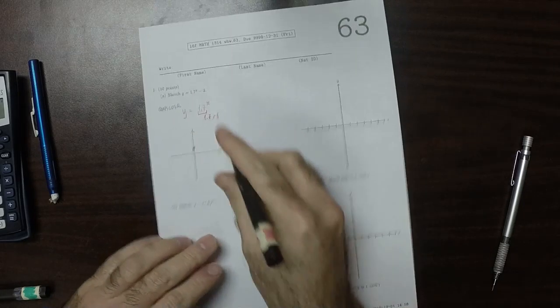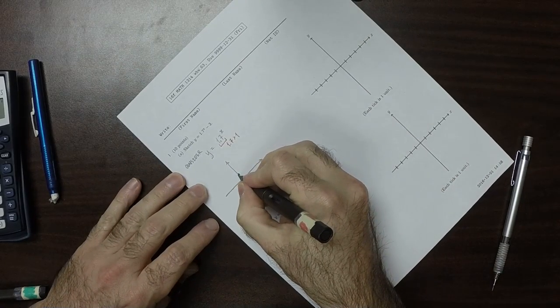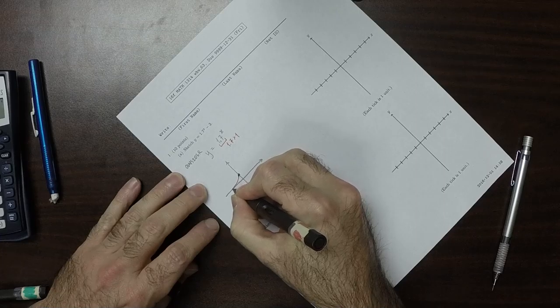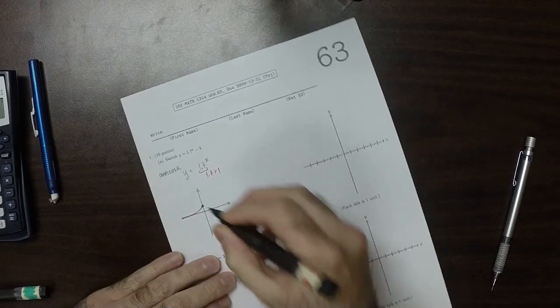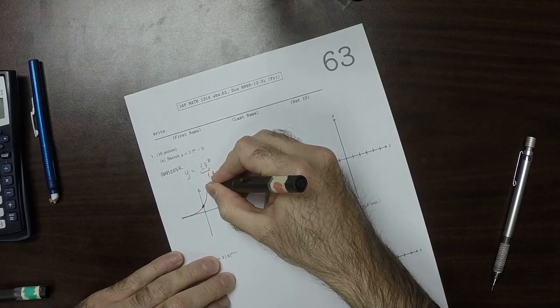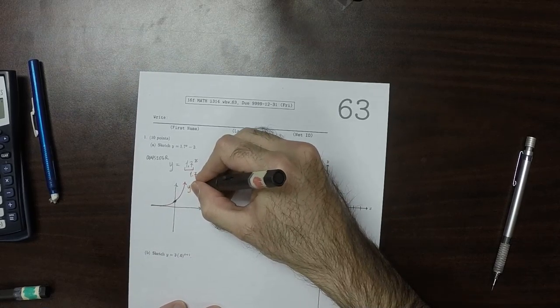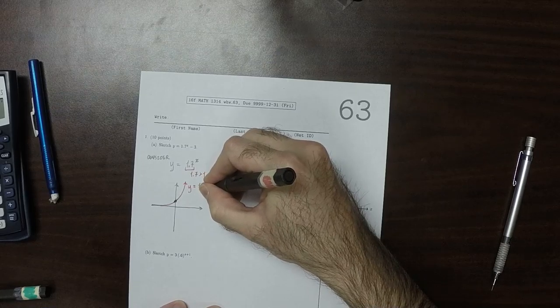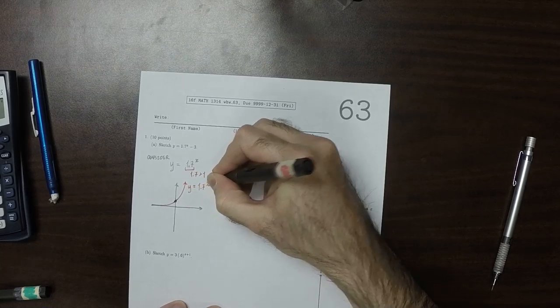So that means that it will look like this. So that's the plot of y = 1.7^x.